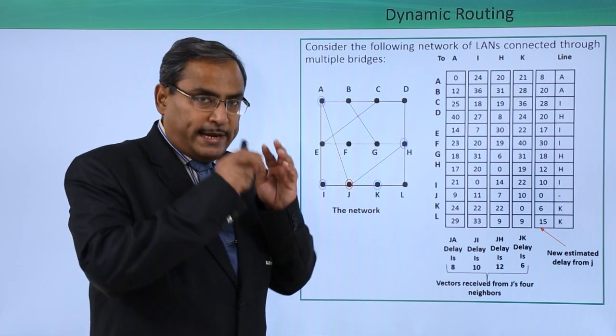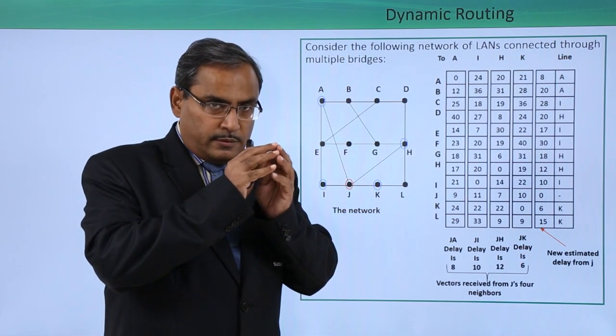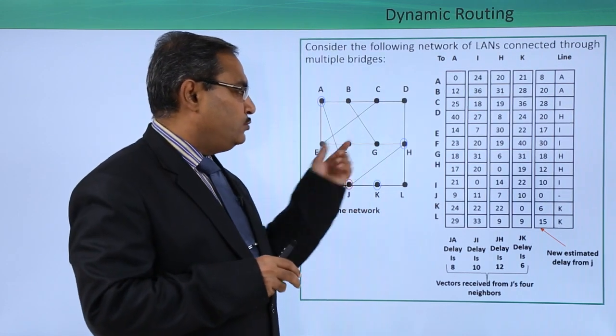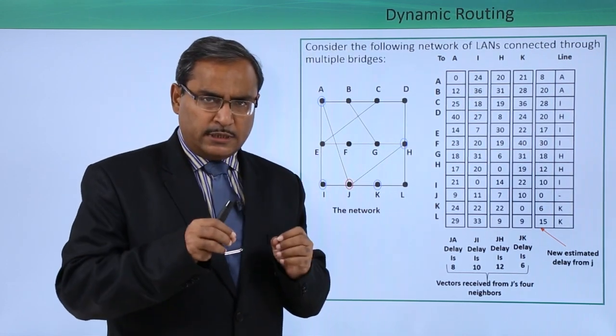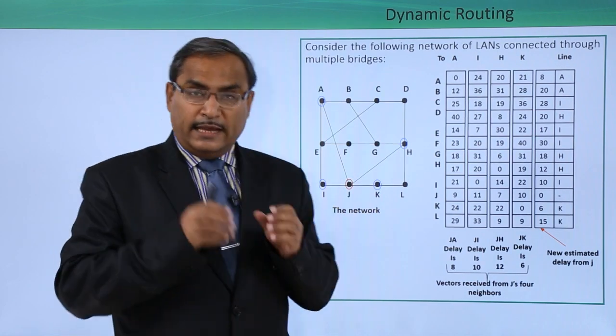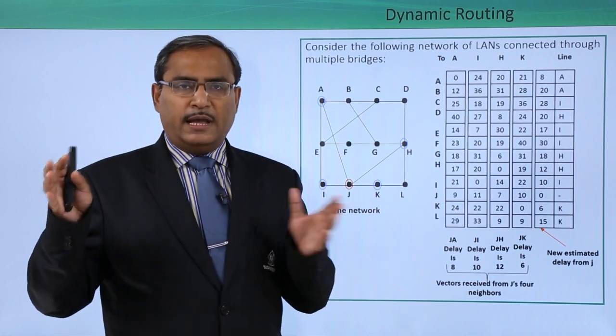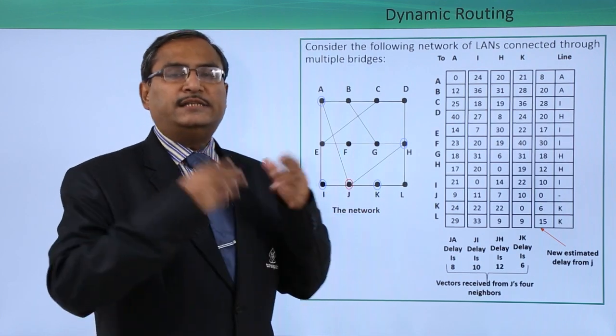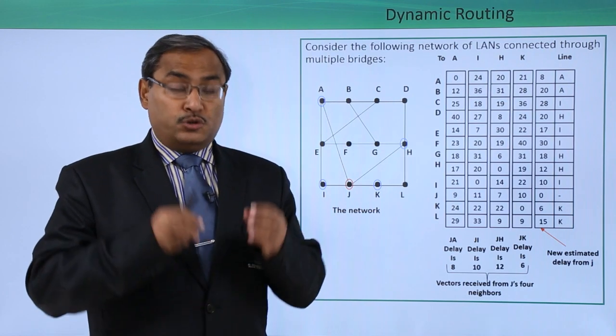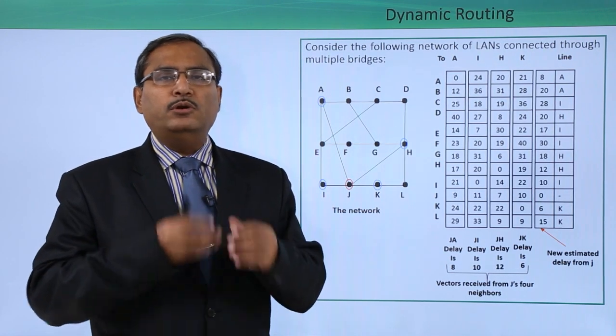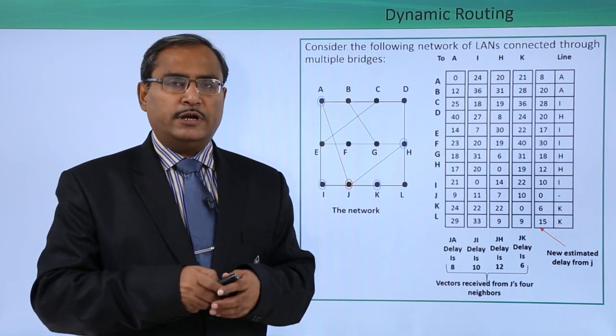J will make its routing table through these particular calculations and then broadcast this routing table to its 4 immediate neighbors who are directly connected through some link. Then they will also be doing the same and sharing their routing tables to J, and J will go for the next version of the routing table. Depending upon the current state of congestion, this routing table will go on getting refreshed and updated. That is why this routing table is called dynamic routing.